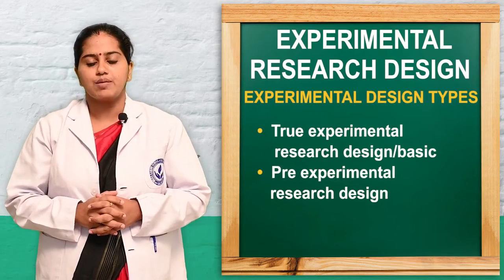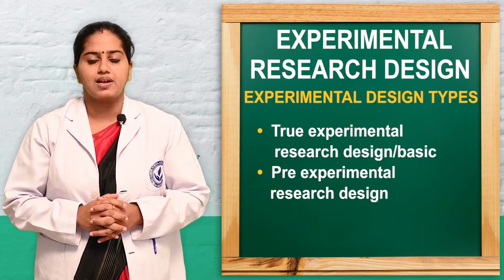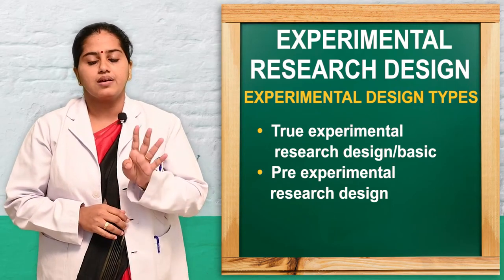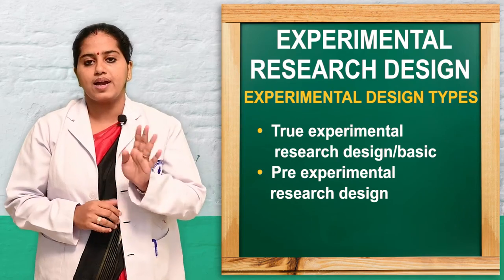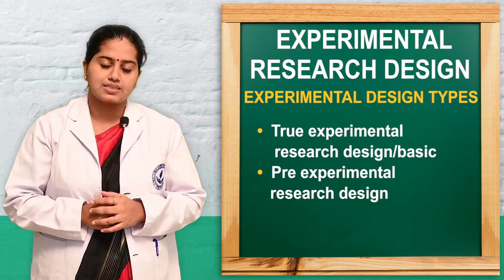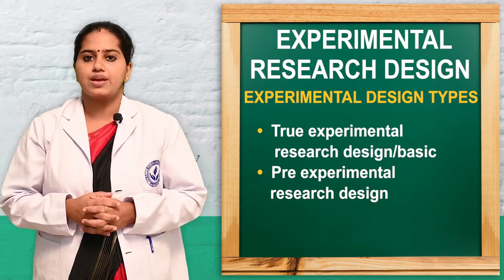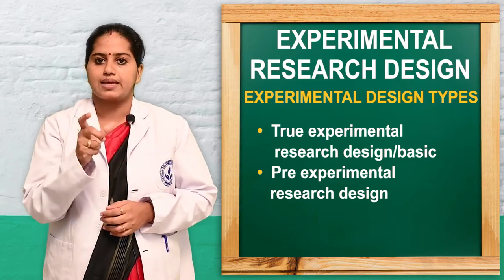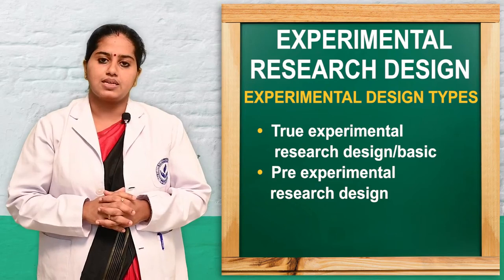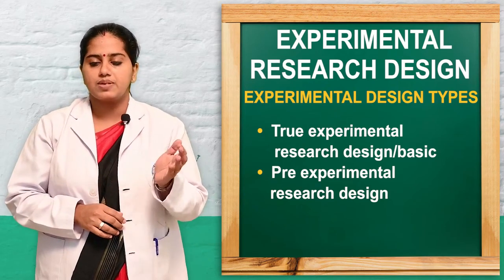Now we will see what are the types of experimental design. Experimental design can mainly be divided into true experimental design, otherwise known as the basic design, and pre-experimental design. In true experimental design, all three characteristics — manipulation, control, and randomization — are present.